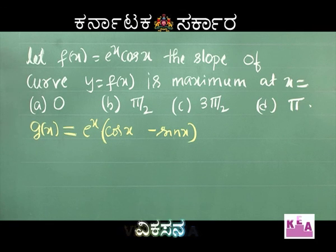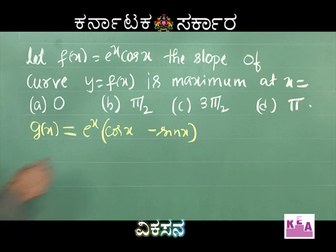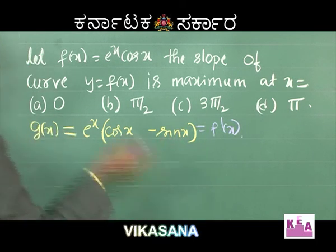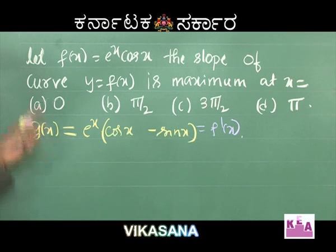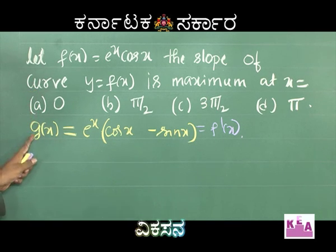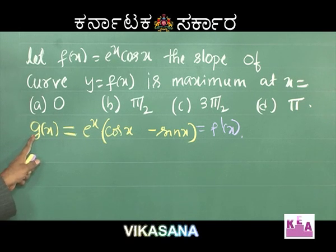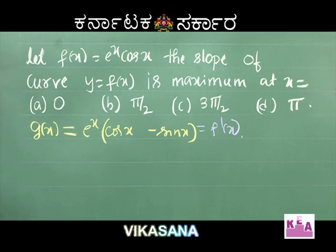You are asked to find the maximum slope of the curve, which is the maximum of g(x). g(x) is f'(x), so now what is g'(x)? Differentiating: eˣ is differentiated keeping (cos x − sin x) as constant, giving eˣ(cos x − sin x).